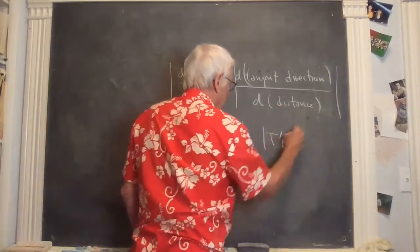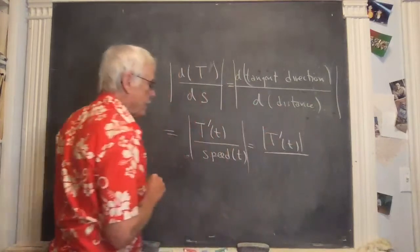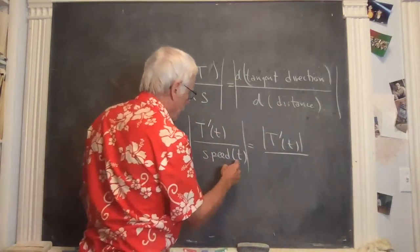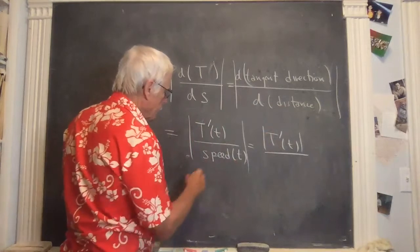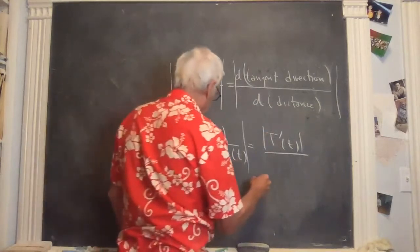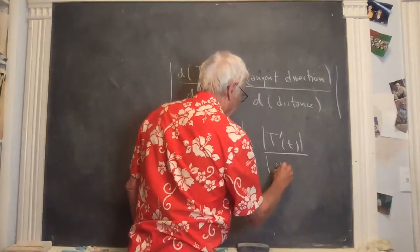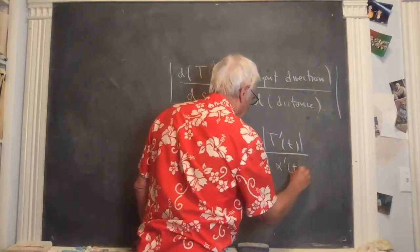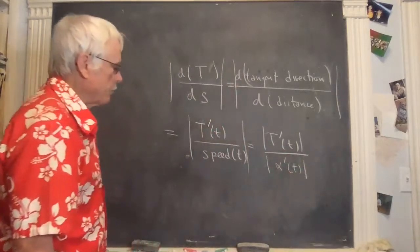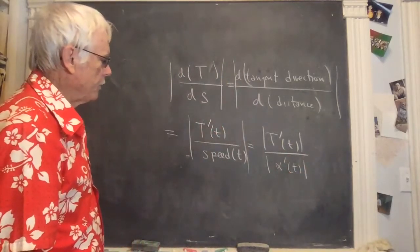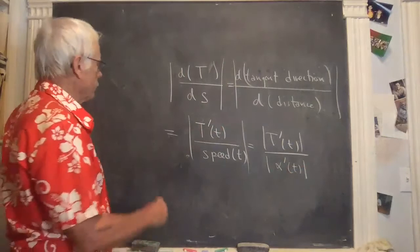So this will be the absolute value or the length of T'(t) divided by the speed. The speed is already a positive value. So this is the length of α'(t). So T'(t) divided by the speed gives the curvature.